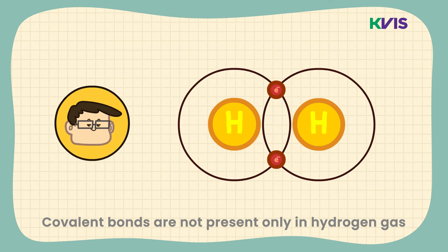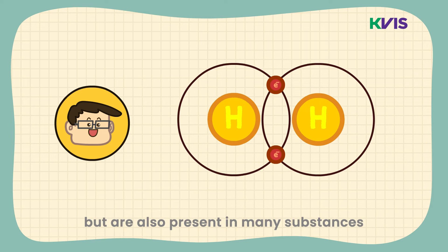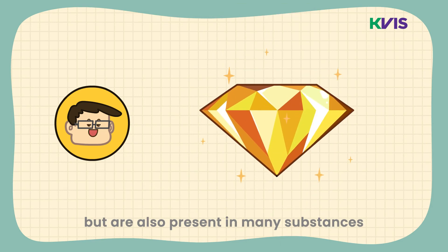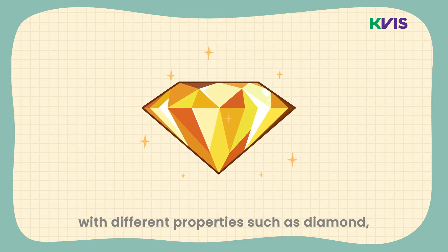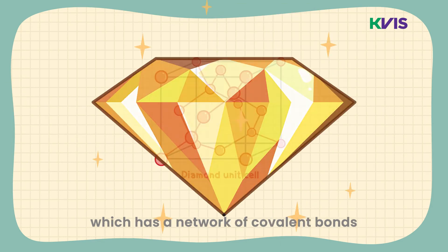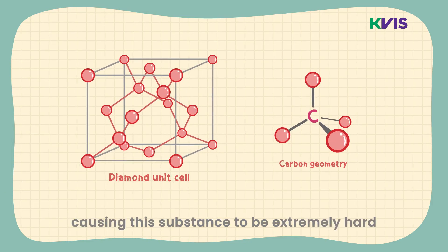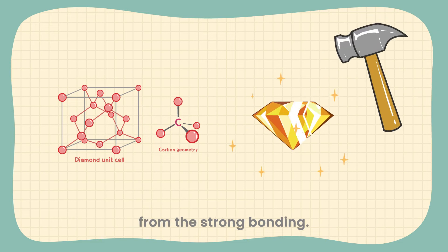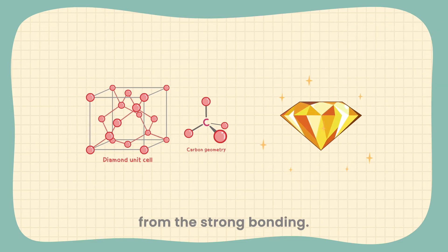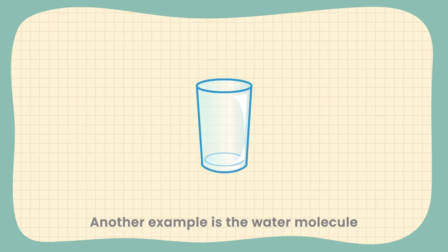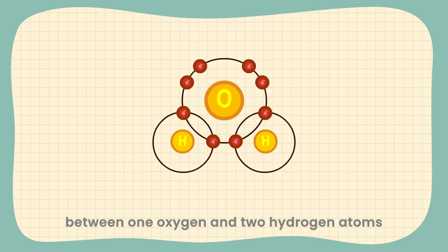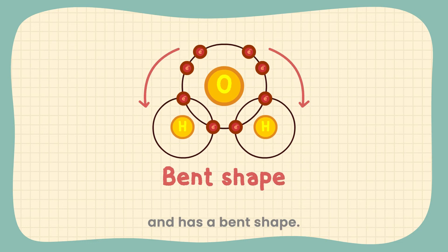Covalent bonds are not present only in hydrogen gas, but also in many substances with different properties, such as diamond, which has a network of covalent bonds among carbon atoms, causing this substance to be extremely hard due to the strong bonding. Another example is the water molecule, which has two covalent bonds between one oxygen and two hydrogen atoms, and has a bent shape.